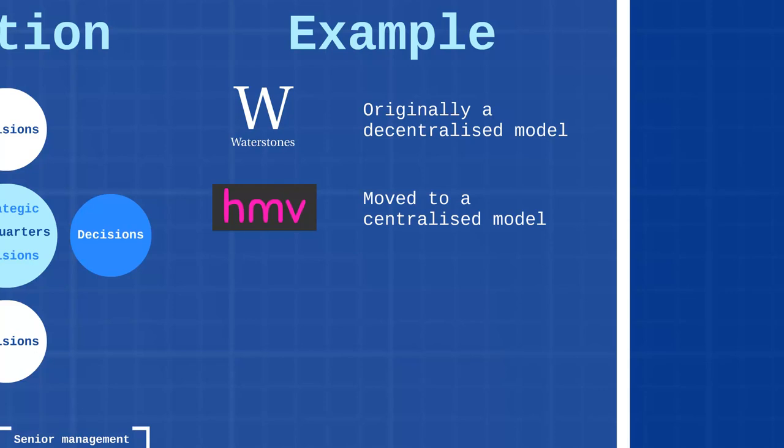For HMV, centralization meant decisions were made at company headquarters. This brought cost benefits through economies of scale — instead of one branch of Waterstones buying stock, HMV could buy stock for all of the branches, purchasing much more and saving money. It also helped with inventory management, such as making sure the organization wasn't overstocked or holding dead stock.